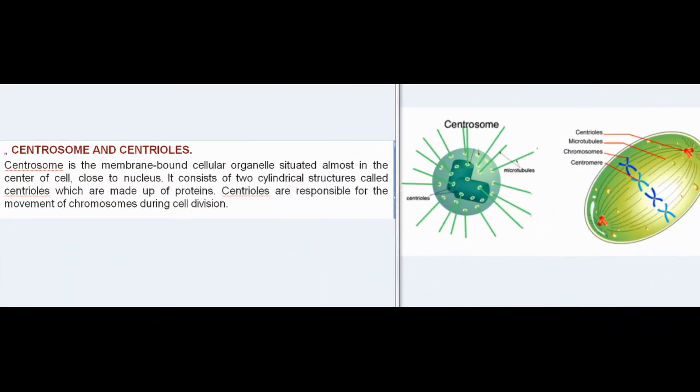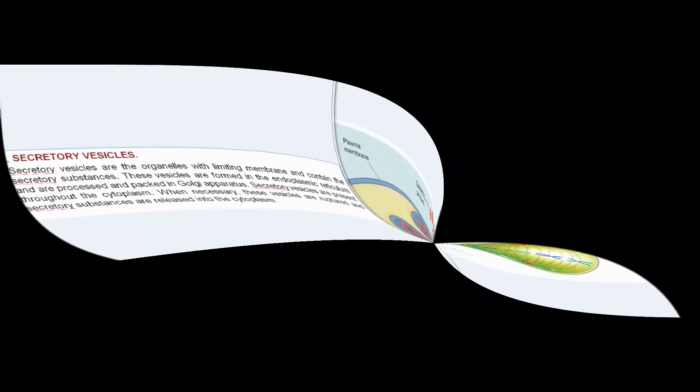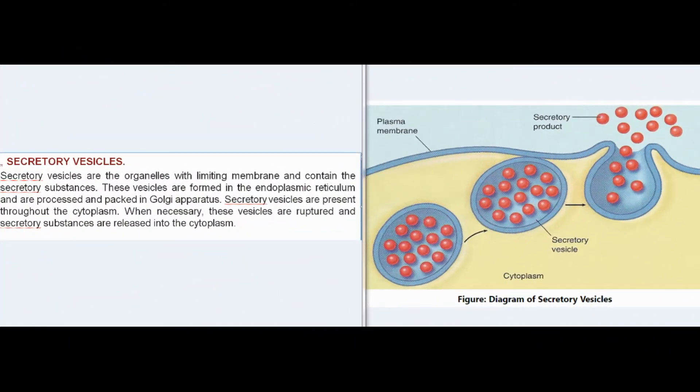Centrosome is a membrane-bound cellular organelle situated almost in the center of the cell, close to the nucleus. It consists of two cylindrical structures called centrioles, made up of proteins, which are responsible for the movement of chromosomes during cell division. Secretory vesicles are organelles with a limiting membrane containing secretory substances, formed in the endoplasmic reticulum and processed and packed in the Golgi apparatus. When necessary, these vesicles rupture and secretory substances are released into the cytoplasm.